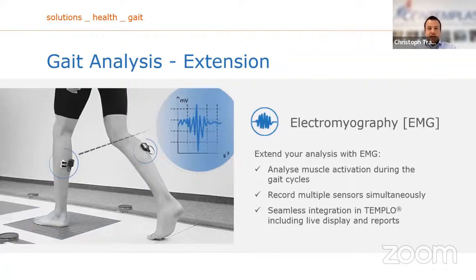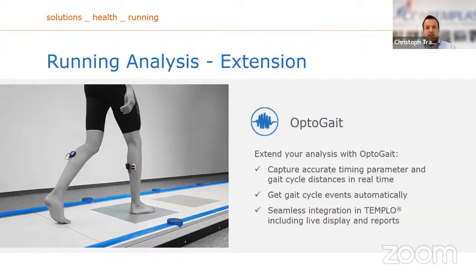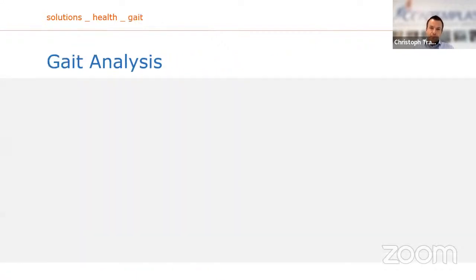EMG sensors for obtaining muscular activity are another add-on, as well as OptoGate data. If you connect the OptoGate alongside the recording, the definitions of the gate cycle — such as the points-in-time for initial foot contact — are performed automatically because the data are already available from the OptoGate system, which helps speed up the workflow significantly.